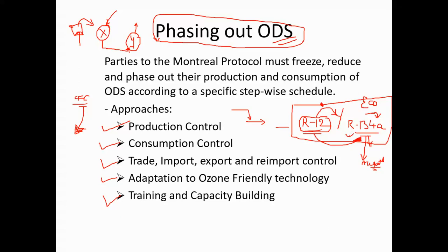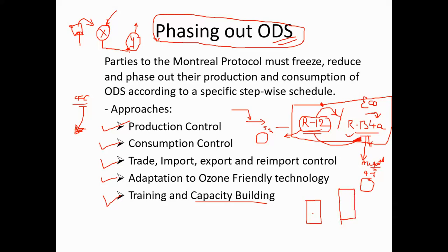Capacity building refers to creating the necessary infrastructure. For example, R12 may use a 5mm diameter charging pipe, while R134a may require 4mm or 6mm. New charging stations and equipment must be produced accordingly. It is similar to how electric vehicles also require new charging stations to be built — this is capacity building.